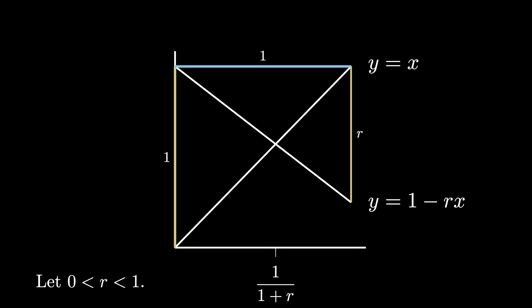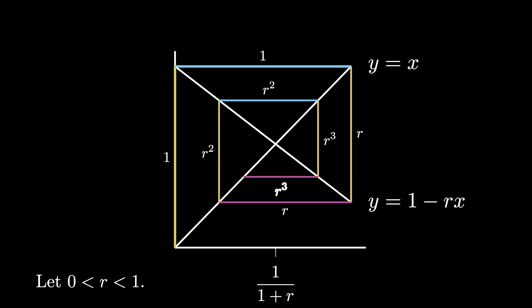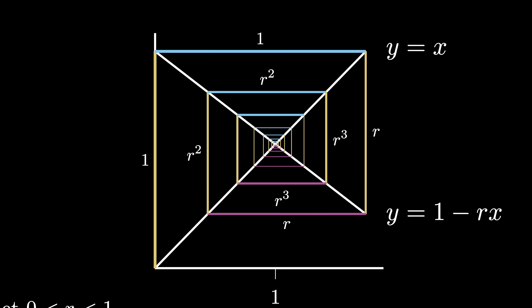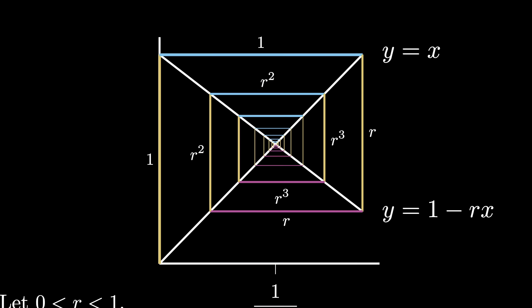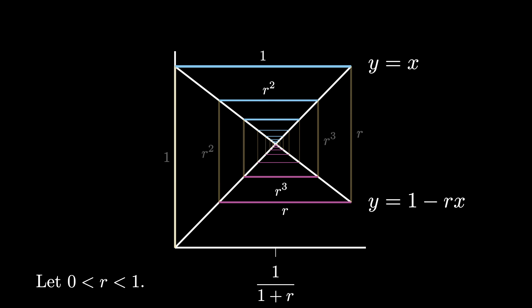The horizontal distance shown also has length r because of the isosceles triangle formed with y equals x. As we keep measuring vertical and then subsequent horizontal distances and spiral in, by plugging in the appropriate x-coordinate, each of the horizontal distances will match the vertical distance of r to the n, and we get each power of r to the n as we spiral towards the center. Because r is less than 1, our spiral diagram spirals all the way to the intersection point, which has an x-coordinate of 1 over 1 plus r.